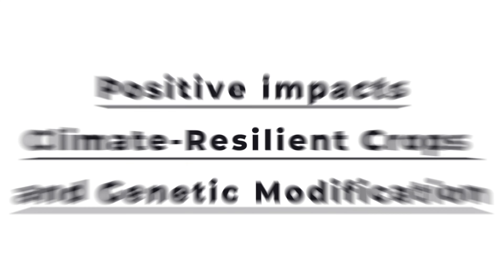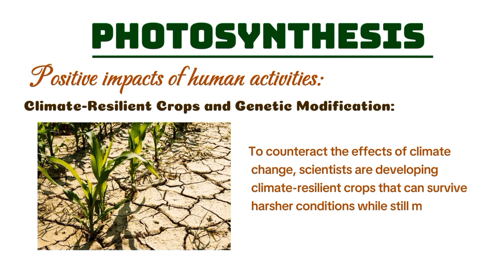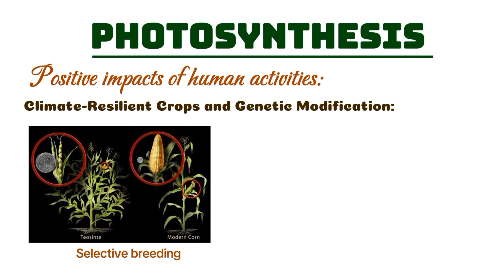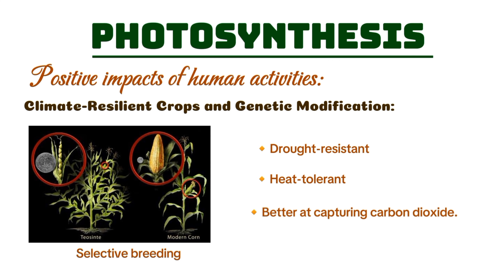To counteract the effects of climate change, scientists are developing climate-resilient crops that can survive harsher conditions while still maintaining high rates of photosynthesis. Genetic modification and selective breeding allow plants to become more drought-resistant, heat-tolerant, or even better at capturing carbon dioxide. These advancements help ensure food security and maintain ecosystems that rely on photosynthetic organisms.